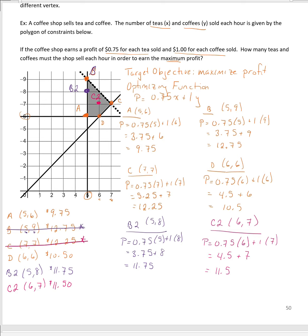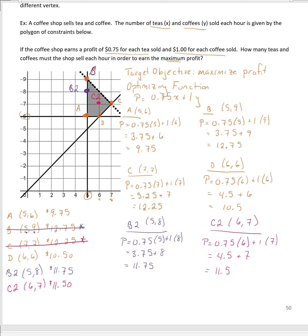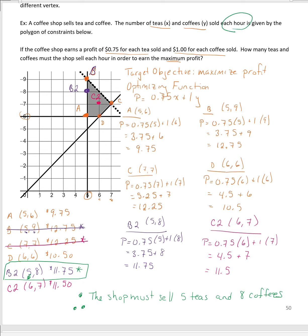Now we've moved C to C2. There are no more dotted-line vertices, so we compare: $9.75, $10.50, $11.75, and $11.50. The maximum is $11.75, and it's not on a dotted line. So the maximum profit is $11.75. The question asks how many teas and coffees the shop must sell per hour to earn the maximum profit: 5 teas and 8 coffees per hour.